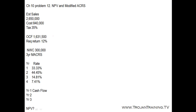Chapter 10, problem 12. In this problem, we need to find the cash flows for year 1, 2, and 3, and then the net present value, if the asset — the fixed asset — actually falls into the three-year depreciation class.